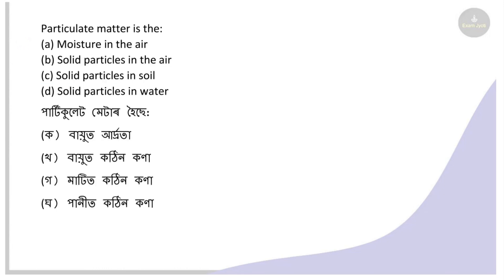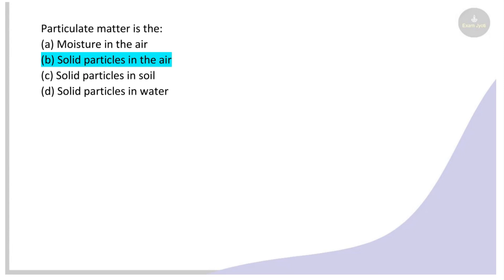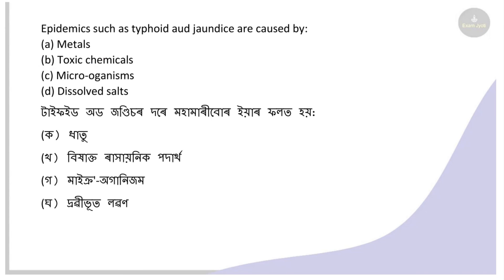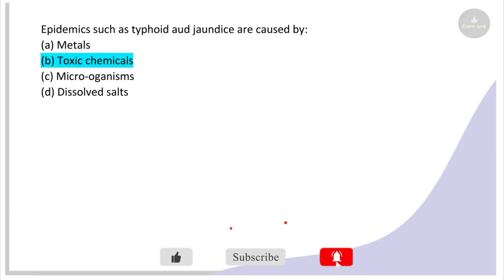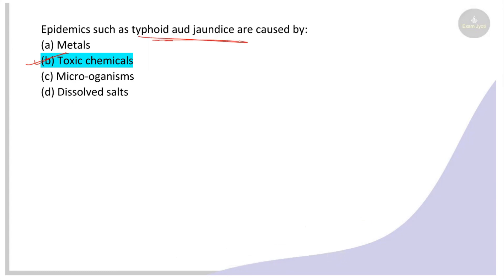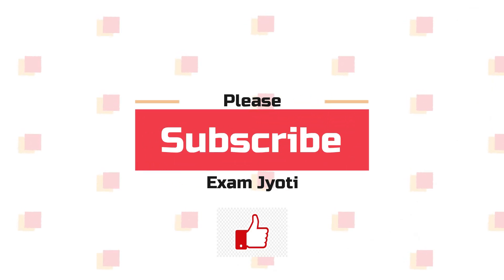Next: Particulate matter is what? Options: moisture in air, solid particles in air, solid particles in soil, solid particles in water. The right answer is solid particles in air. Next: Epidemics such as typhoid and jaundice are caused by what? Options: moisture in air, metals, toxic chemicals, microorganisms, dissolved salts. The right answer is microorganisms. This was our last question.